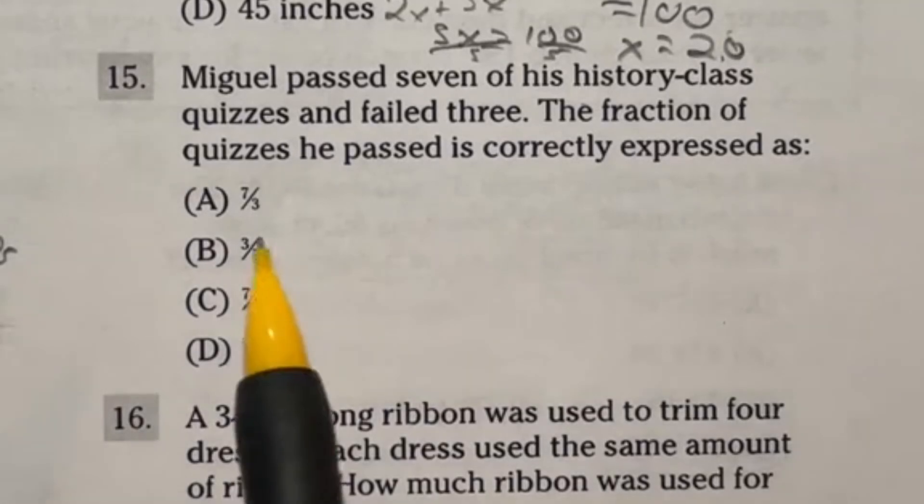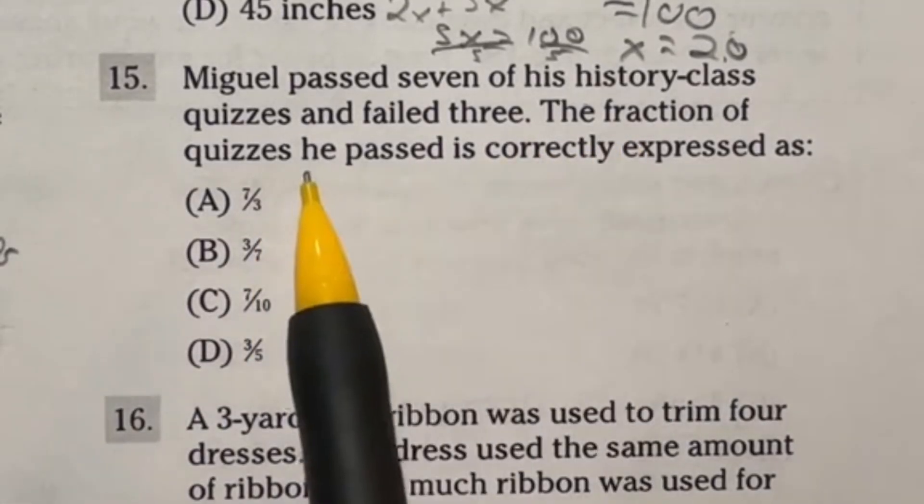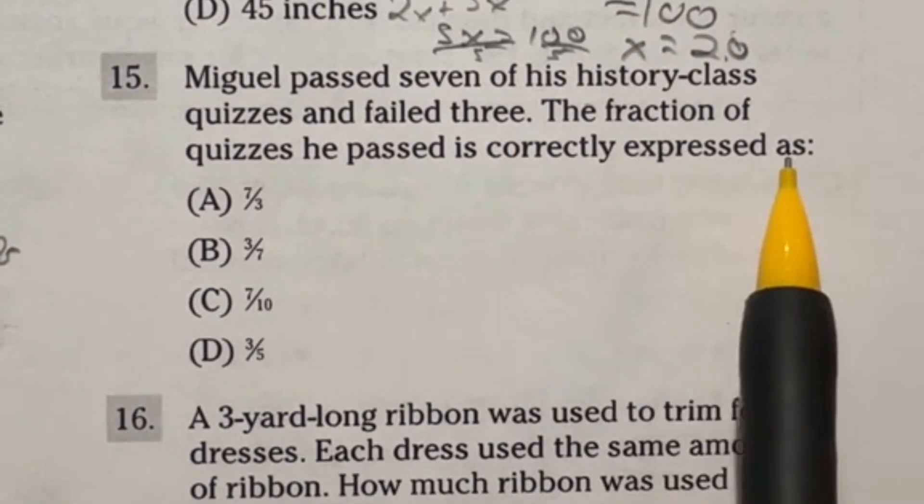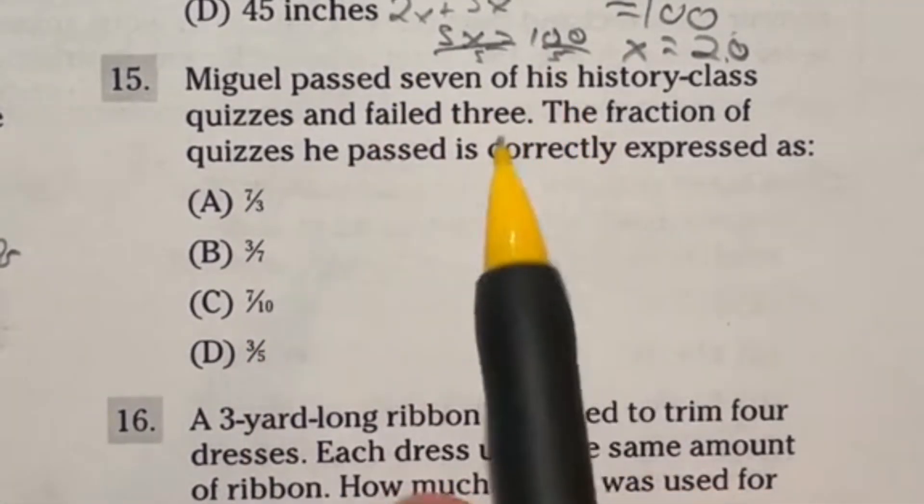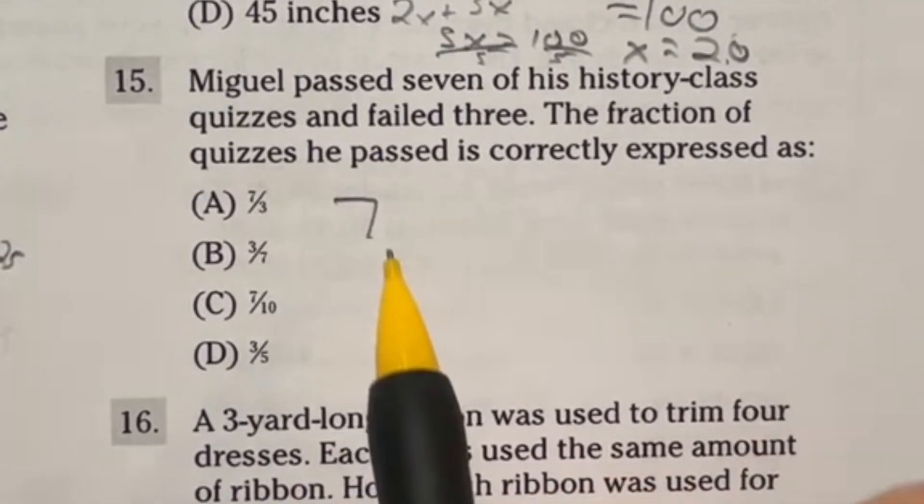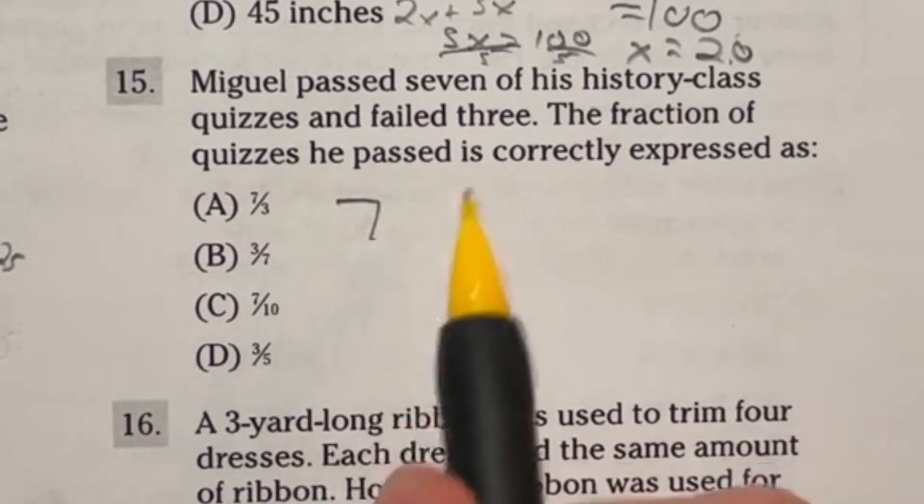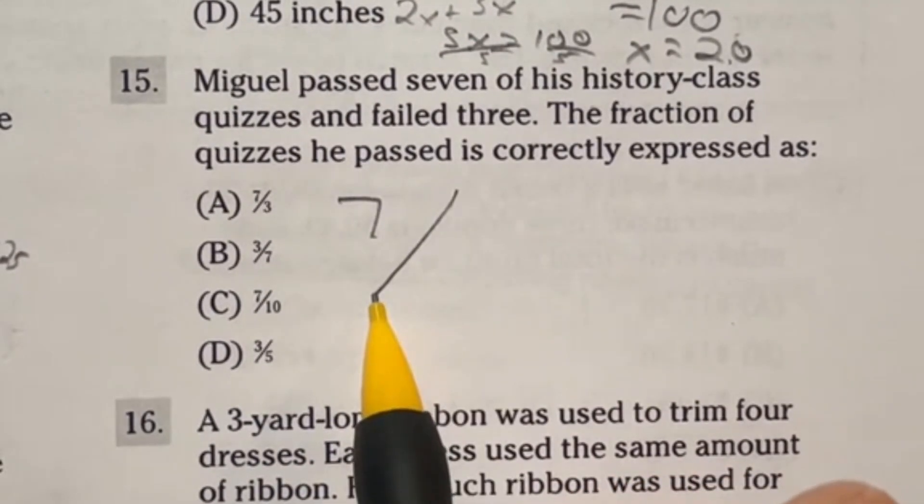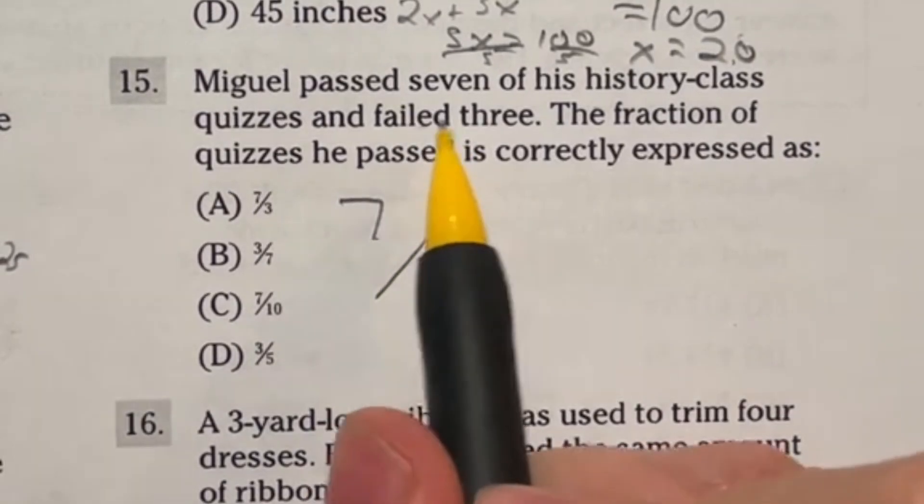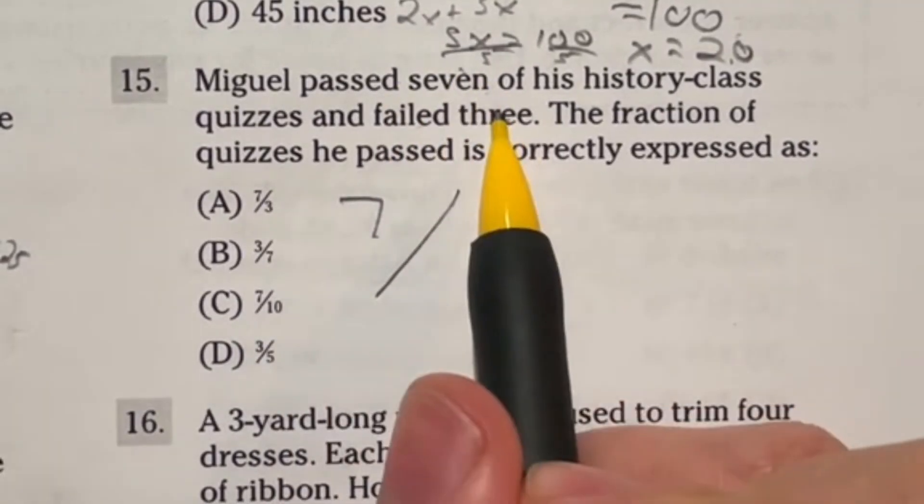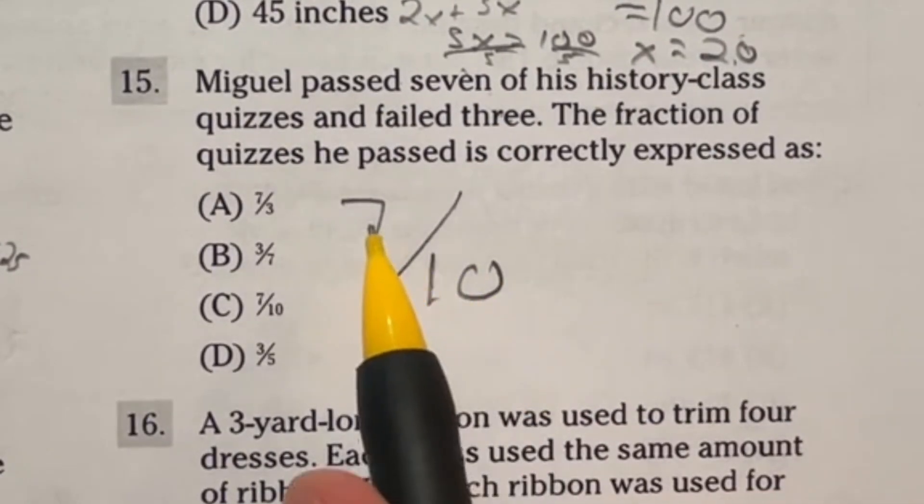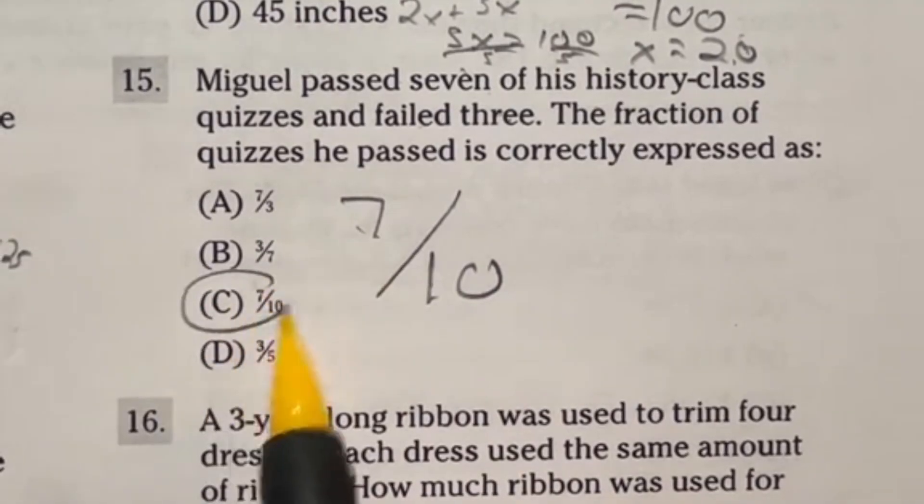Let's see how fast we can go with this one. It says Miguel passed 7 of his history class quizzes and failed 3 of them. The fraction of quizzes he passed is correctly expressed as what? So in this case, we're looking at 7 is how many he passed. Now, when you're looking at the fraction of the total amount he passed, you divide that by the total number of quizzes. He failed 3, passed 7, so 7 plus 3 is 10, which means that's our total number of quizzes. So our final answer should be 7 over 10, which is answer C.